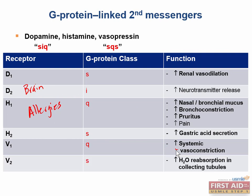The V2 receptor is of the G-sub-S class, found primarily in the kidney. It increases water permeability and reabsorption in the collecting tubules of the kidney. Vasopressin, released from the posterior pituitary, goes into circulation, finds its way to the kidney, and acts on V2 receptors. An alternate name for vasopressin is antidiuretic hormone (ADH) — it prevents diuresis by stimulating the V2 receptor, triggering water reabsorption in the collecting tubules.